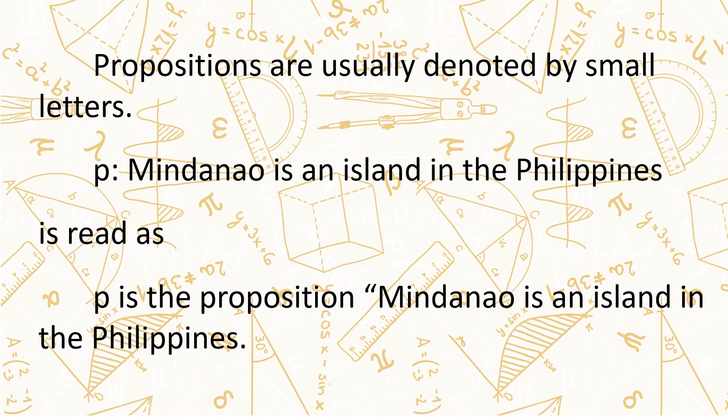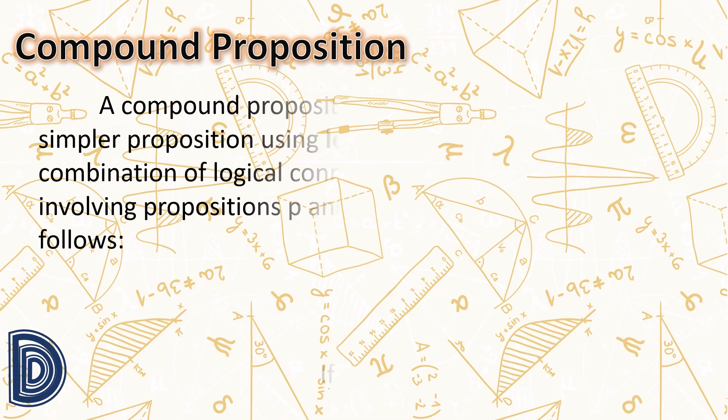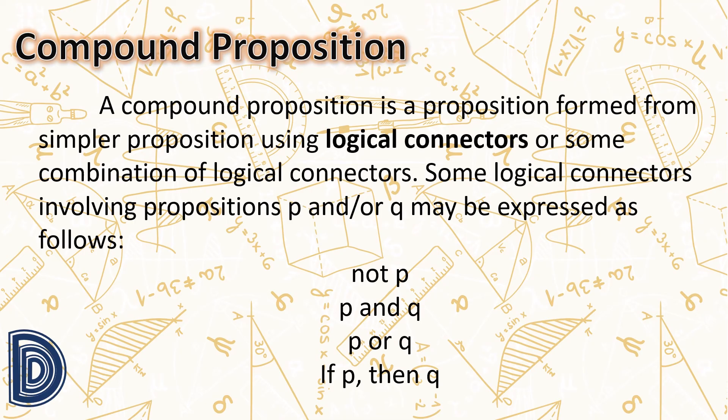Propositions are usually denoted by small letters. 'Mindanao is an island in the Philippines' is read as: P is the proposition 'Mindanao is an island in the Philippines.' A compound proposition is a proposition formed from simpler propositions using logical connectors or some combination of logical connectors.